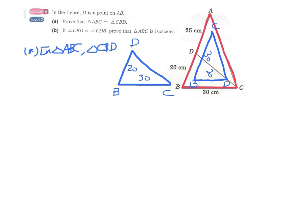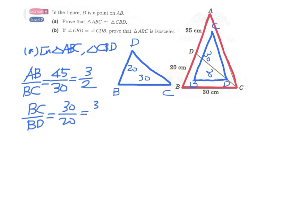We have the ratio of two sides first. AB over BC is 45 over 30, which is 3 over 2. BC over BD is 30 over 20, again the ratio is also 3 over 2. And lastly, angle B equals angle B. This is a common angle. Therefore they are similar triangles.